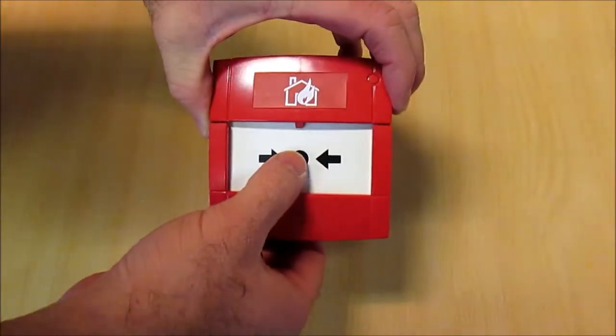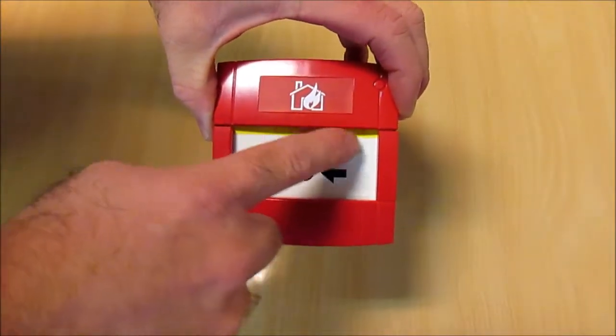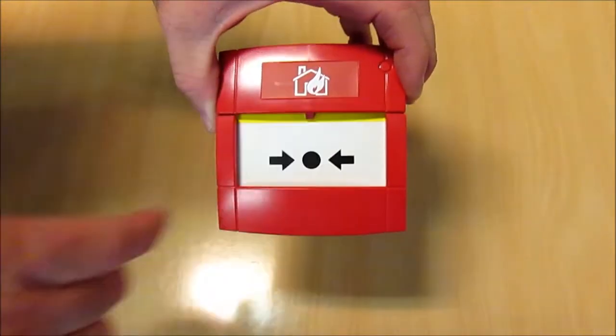When the call point is in an operated position, you press the button and you'll see that this yellow line here is clearly displaying it as operated.